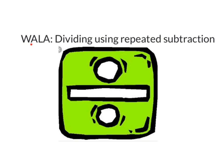We are learning about dividing using repeated subtraction. This is the symbol for dividing. When you divide something, you share it into equal groups.